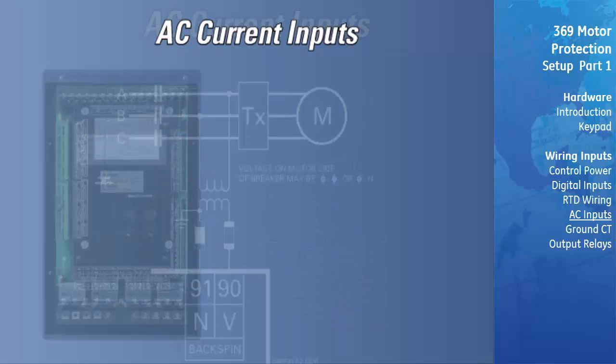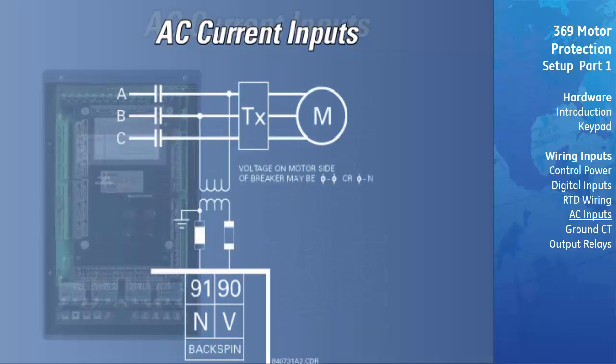The Backspin Voltage Input: The backspin detection option enables the 369 to detect a motor freewheeling in reverse in downhole pump applications, enabling timely and safe restarting. The backspin voltage input is only operational if the backspin option has been purchased for the relay. This input allows the 369 to sense whether the motor is spinning after the primary power has been removed. This input must be wired to a separate VT mounted downstream of the breaker or contactor.